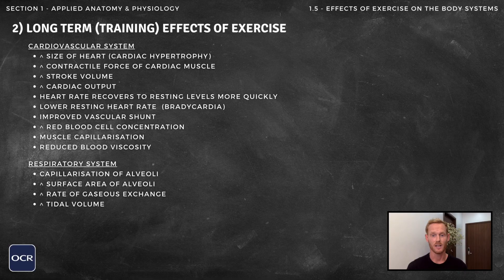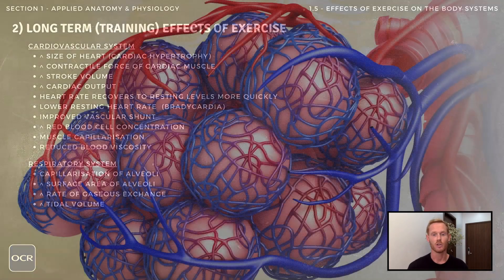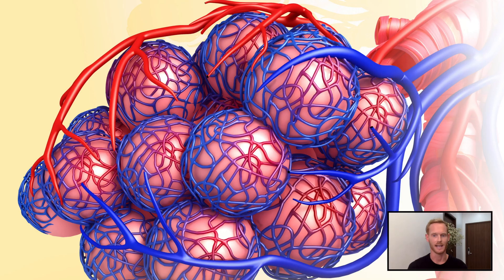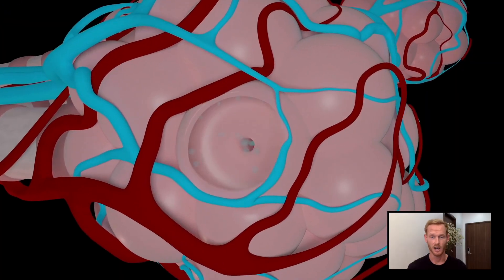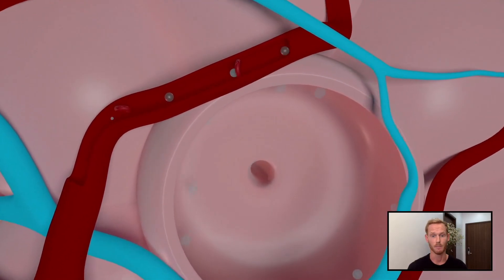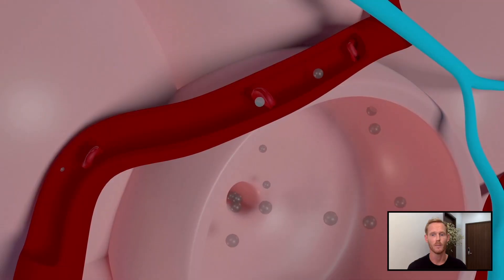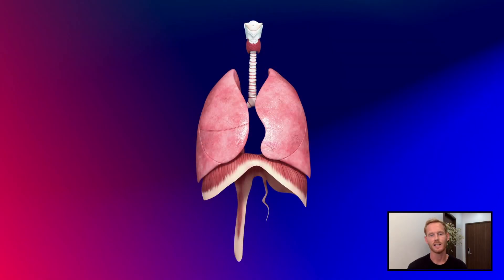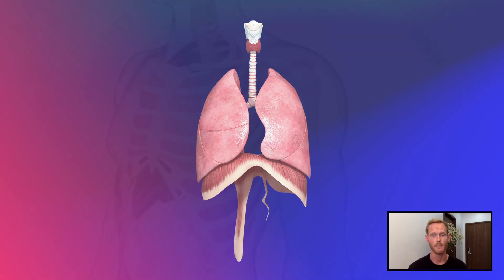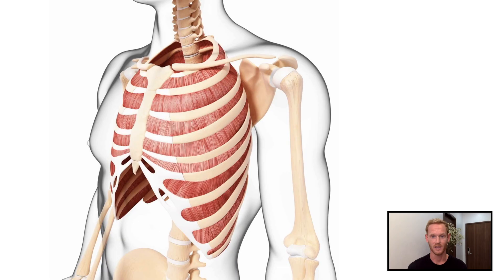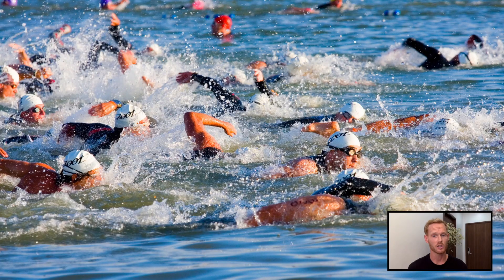For the long-term effects on the respiratory system, training increases capillary density surrounding the alveoli and the surface area of the alveoli themselves, making gaseous exchange more efficient. There is also likely to be a small increase in tidal volume as the respiratory muscles — the diaphragm and intercostal muscles — become stronger, allowing more oxygen to enter the lungs with each breath. These adaptations result in more oxygen reaching the muscle cells, allowing athletes to work at higher intensities and for longer periods of time.